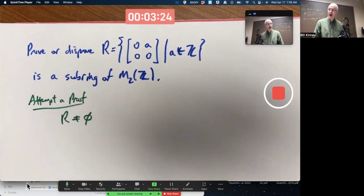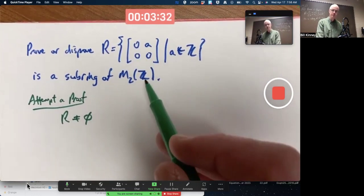It's certainly a subset of that. Is it closed under subtraction and is it closed under multiplication? That's what you need to verify. If it is, then the subring test says it will be a subring of the bigger ring.